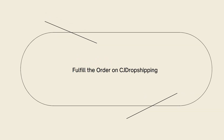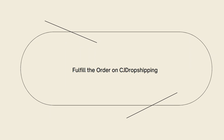Now, fulfill the order on CJ dropshipping. So in the CJ dropshipping app within your Shopify admin, locate the order that needs to be fulfilled. Review the order details including the customer's shipping address and selected product options. Then click on the 'Fulfill Order' or similar button to initiate the fulfillment process.